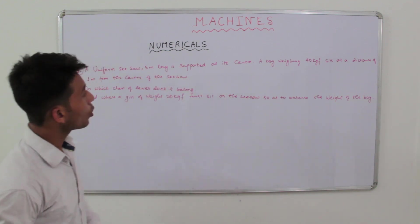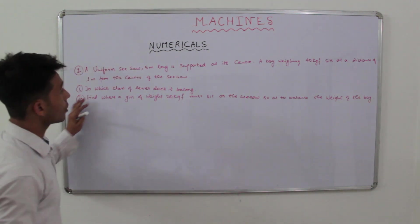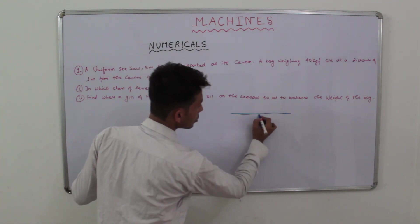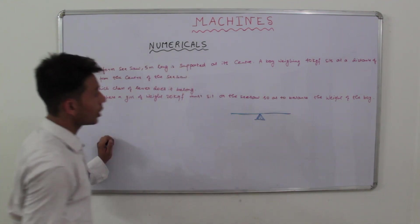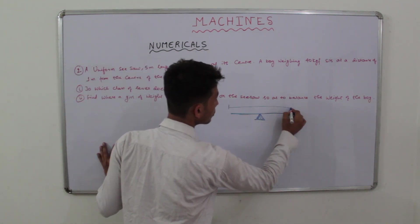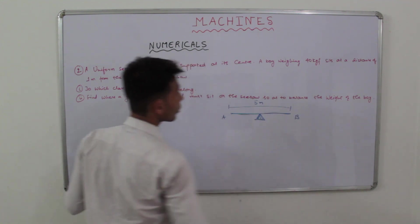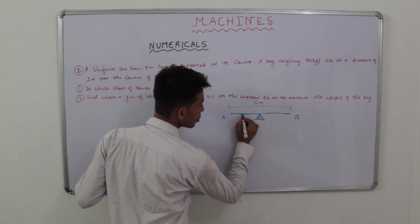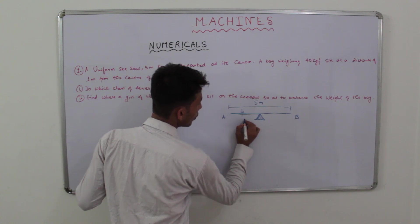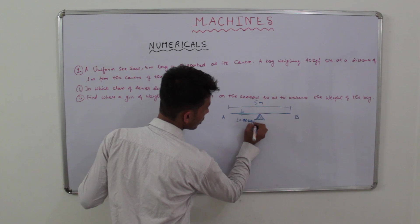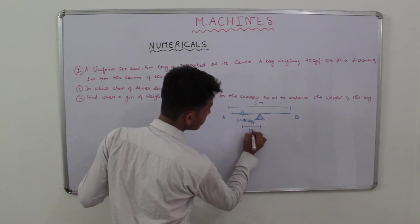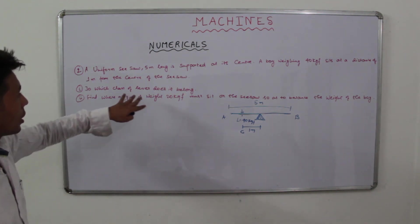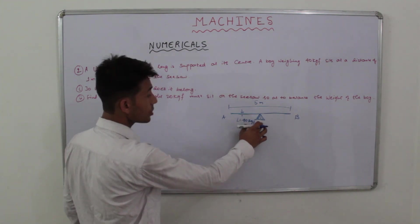Moving on to the second numerical: a uniform seesaw 5 meters long is supported at its center. A boy weighing 40 kgf sits at a distance of 1 meter from the center. Let us draw the seesaw — it is fixed at the center, total length AB = 5 m. The boy sits 1 meter from the fulcrum with a load of 40 kgf at point C. The fulcrum is between load and effort, so it belongs to the first class.